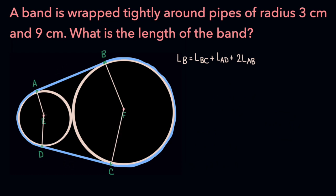AE and DE are radii of the smaller circle, so their length is going to be 3. The problem tells us that. And similarly, BF and CF are radii of the larger circle, so their length is 9.